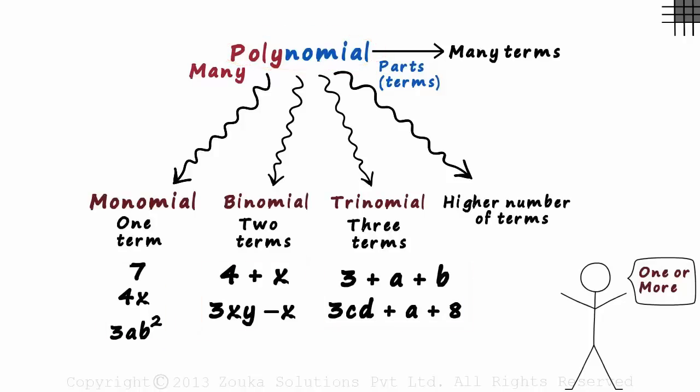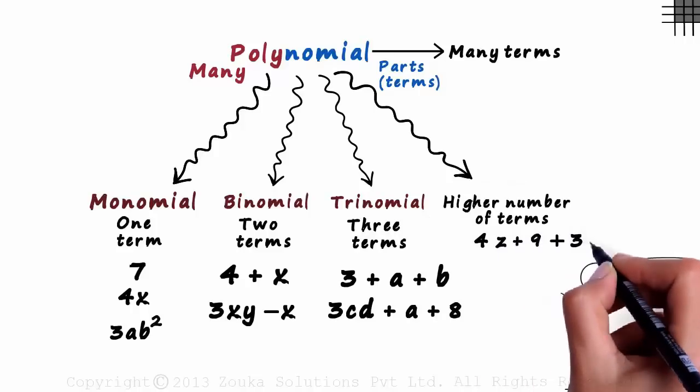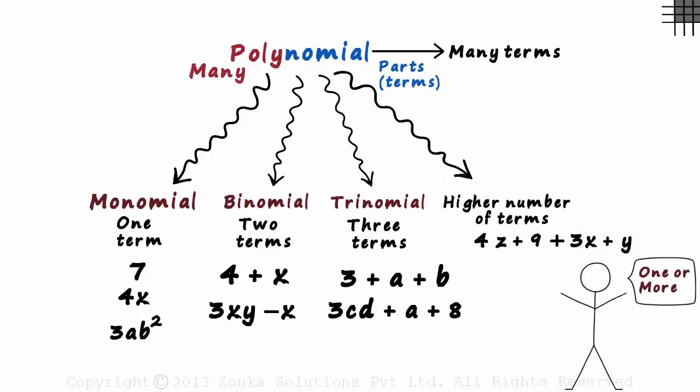And an example of the last type would be 4z plus 9 plus 3x plus y. It has four terms in all. So remember, a polynomial is an expression which has one or more terms.